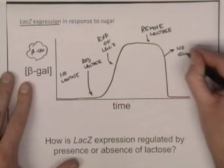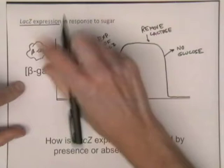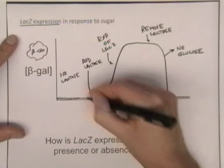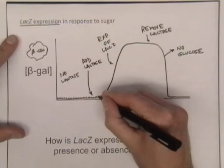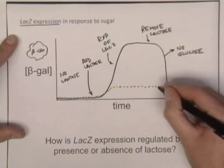Let's think about how this would look different if there was glucose present. I'm going to use a dotted line to represent that. We're still looking at the expression of the beta-galactosidase enzyme, the expression of the lacZ gene. There would be no difference in the presence or absence of glucose before lactose is added — it would still be very low. Now here we add lactose, and you will get a little bit of an increase in expression, but it won't be very much — not nearly as much as if you only have lactose present. And once the lactose is removed, the levels go back down close to zero.